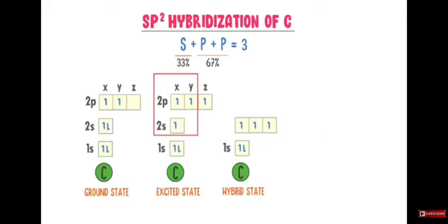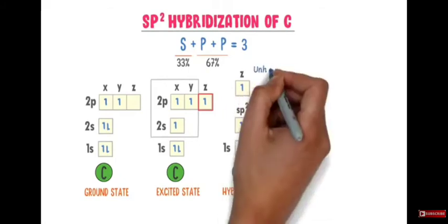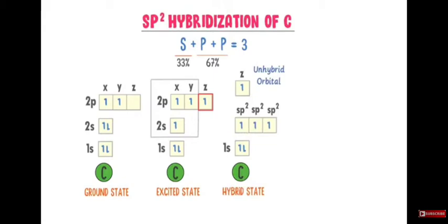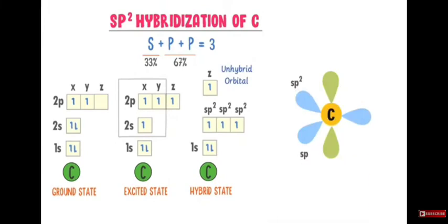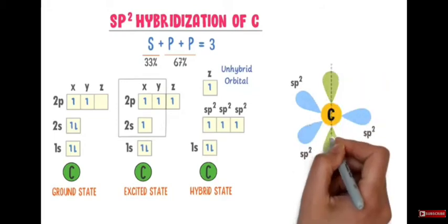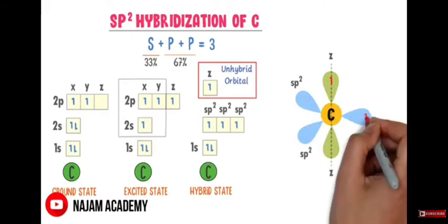The three sp2 hybrid orbitals are formed from the 2s, 2px, and 2py orbitals, while the 2pz orbital remains unhybridized — it does not combine with the others and has higher energy. So we have three sp2 hybrid orbitals, each containing one unpaired electron, and one unhybridized 2pz orbital with one unpaired electron.